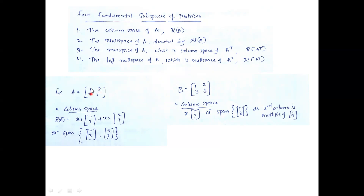Column space is the area spanned by all the column vectors. For matrix A with columns [1,3] and [2,7], the column space contains all linear combinations: x1 times [1,3] plus x2 times [2,7] for all values of x1 and x2. When x1=0, x2=0, we get the origin; when x1=1, x2=0, we get [1,3]; when x1=0, x2=1, we get [2,7].